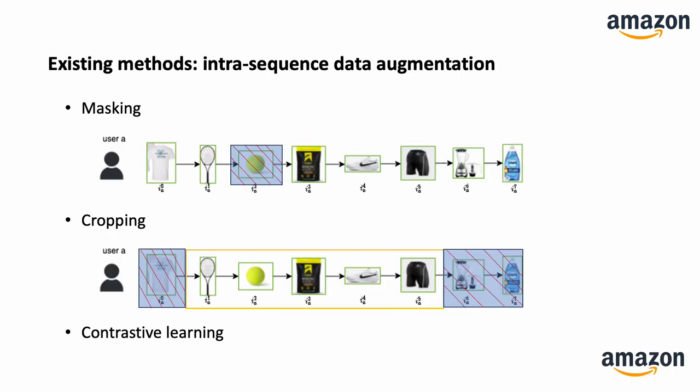Data augmentation is a popular method to alleviate the data sparsity issue. Existing methods include masking items and cropping a sequence. However, these methods operate within a sequence and will not generate new customer-item interactions.